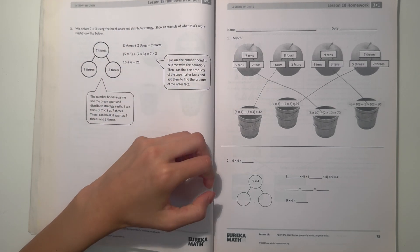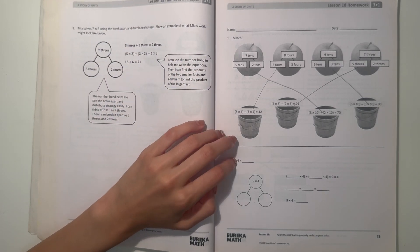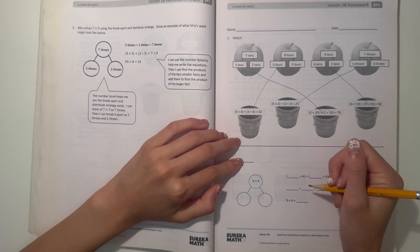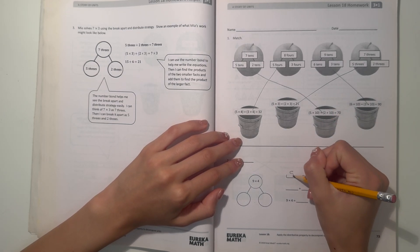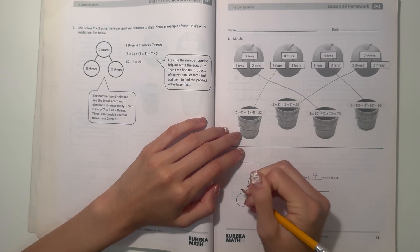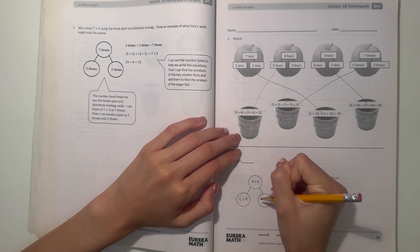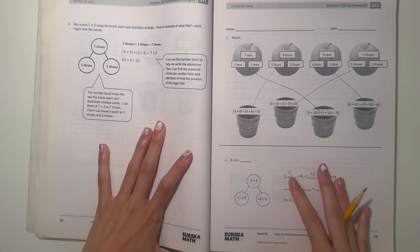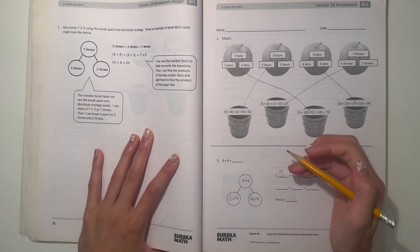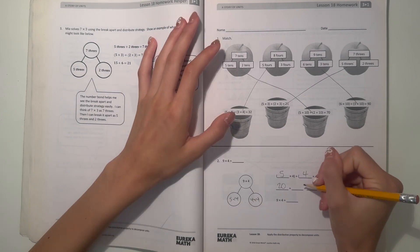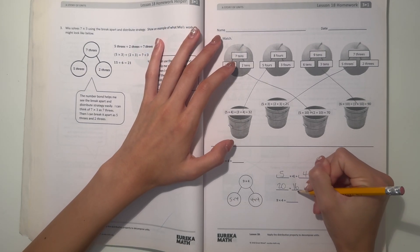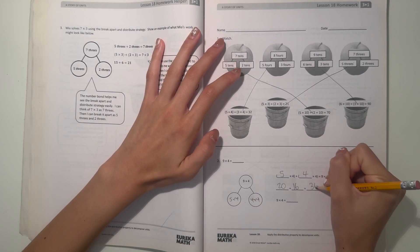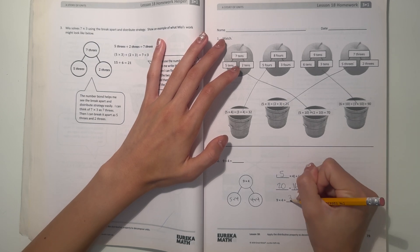All right, number two. So we're doing the same thing as above. Nine times four - well, let's see, we can break it apart into five fours and four fours. So we can do five times four and four times four. So now that we did that, five times four is 20 and four times four is 16. So 20 plus 16 is 36, which means nine times four is 36.